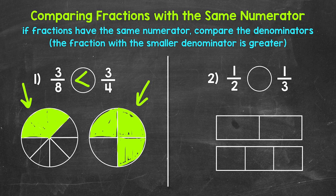Let's think about this. We are looking at one part out of two and one part out of three. One of the wholes has only been divided into two equal parts, and the other whole has been divided into three equal parts. The whole divided into only two parts will have bigger parts than the whole divided into three. So one half is greater than one third.